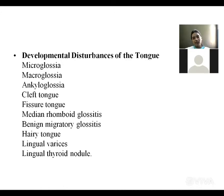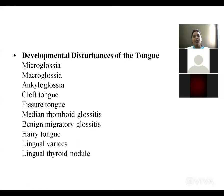Aglossia means absence of the tongue. Microglossia means small tongue. Macroglossia means abnormally large tongue. Cleft tongue has a cleft present in the middle of the tongue. Fissured tongue has numerous fissures on the dorsal surface. Then median rhomboid glossitis, benign migratory glossitis, hairy tongue, lingual varices, and lingual thyroid nodule.